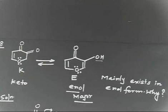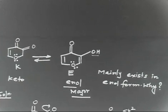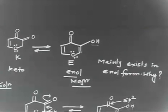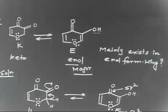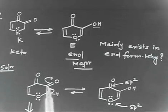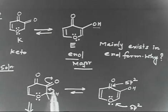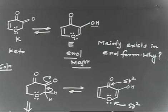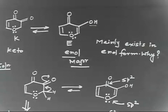You see how to convert the keto form to enol form. This is your keto form with two alpha hydrogens at the keto group. These hydrogens are acidic. If I replace this hydrogen and attach it here, I will have enol form.